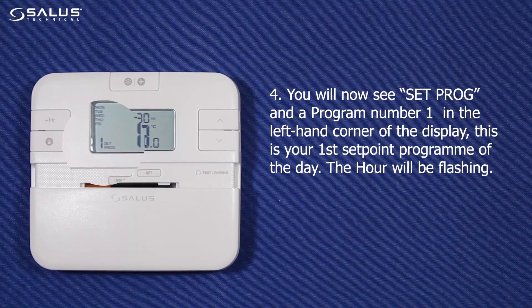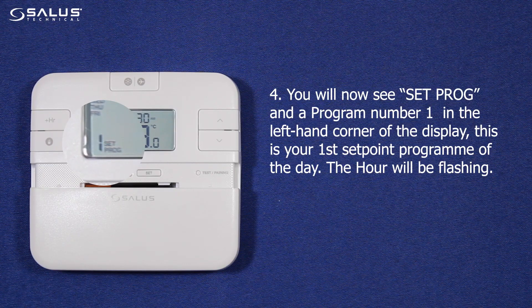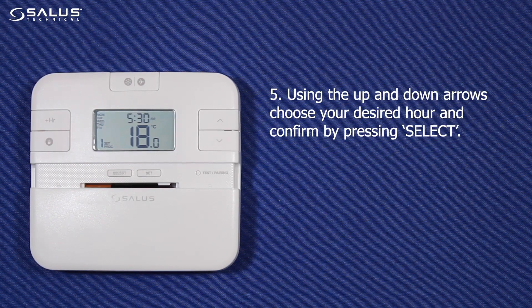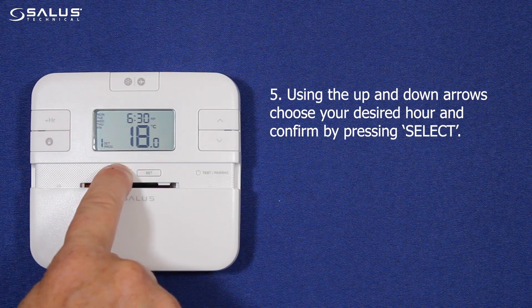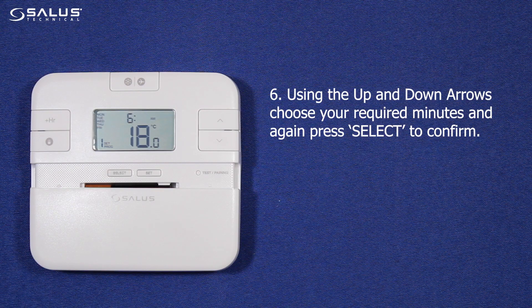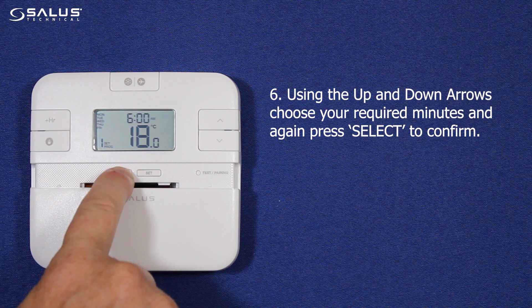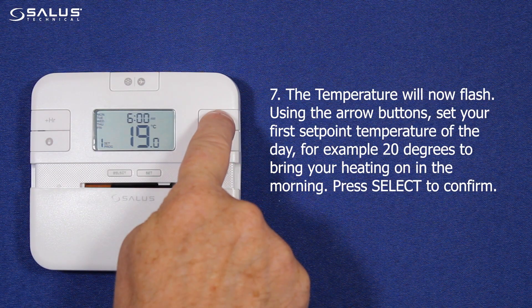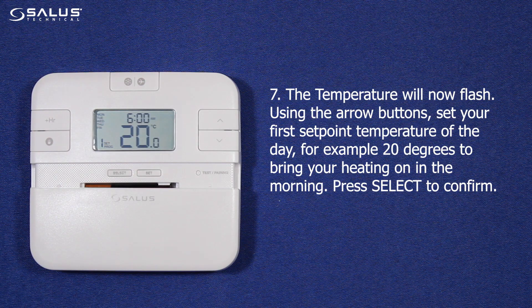Step 4: You will now see 'set prog' and a program number 1 in the left hand corner of the display. This is your first set point program of the day. The hour will be flashing. Step 5: Using the up and down arrows, choose your desired hour and confirm by pressing select. Step 6: Using the up and down arrows, choose your required minutes and again press select to confirm. Step 7: The temperature will now flash. Using the arrow buttons, set your first set point temperature of the day, for example 20 degrees to bring your heating on in the morning. Press select to confirm.